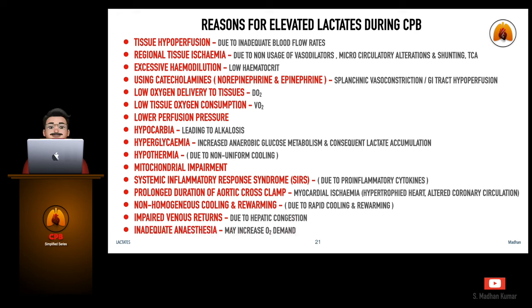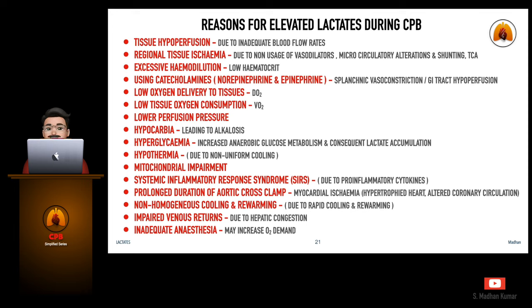Additional CPB causes include hyperthermia due to non-uniform cooling, mitochondrial impairment, systemic inflammatory response syndrome from pro-inflammatory cytokines, prolonged aortic cross-clamp duration, myocardial ischemia in hypertrophic hearts or altered coronary circulation, non-homogeneous cooling and rewarming from rapid temperature changes, impaired venous return due to hepatic congestion, and inadequate anesthesia which may increase oxygen demand.